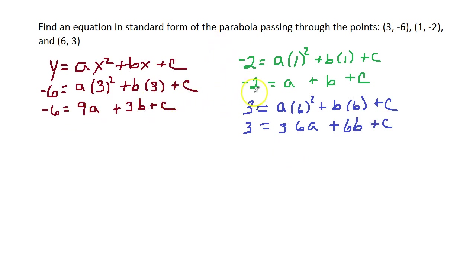So our system has these three equations. Now, if you want, we can write them all one beneath the other. I'm going to put them in order with a, b, then c. So we have 9a plus 3b plus c equals negative 6, then a plus b plus c equals negative 2, and then 36a plus 6b plus c equals 3.